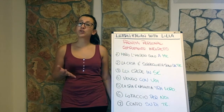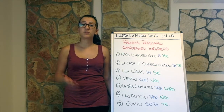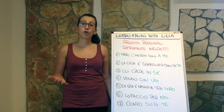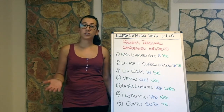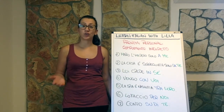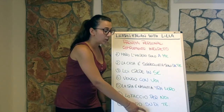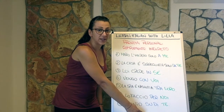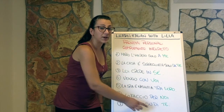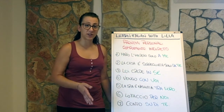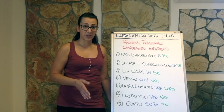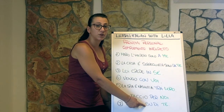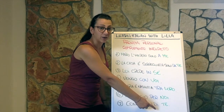Lo faccio per noi. — I do it for us. Conto su di te. — I count on you. We use both prepositions in this case because it's followed by an indirect pronoun. Otherwise we only use 'su' if it's followed by a noun.